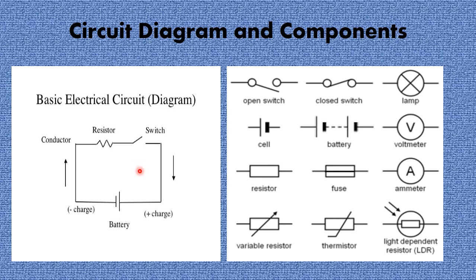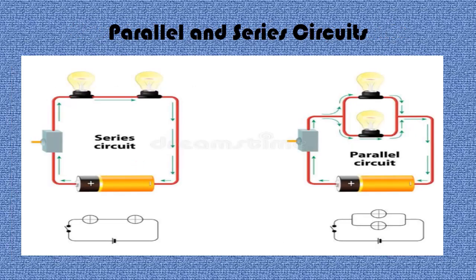There are two types of circuits: series circuits and parallel circuits. In a series circuit, components are connected end-to-end, forming a single path for current to flow. As you can see, the battery, the switch, and the two bulbs are all connected end-to-end, allowing only one path for electrons to flow.